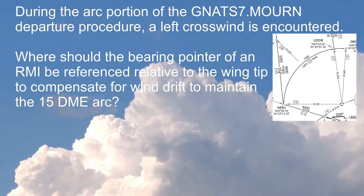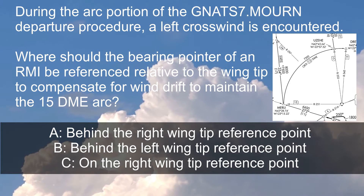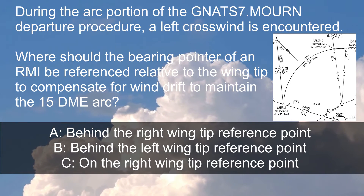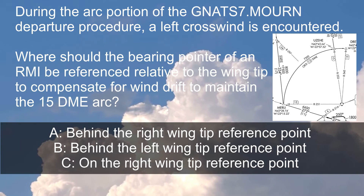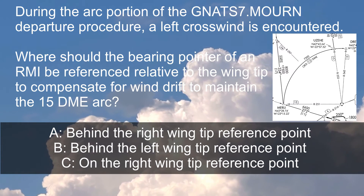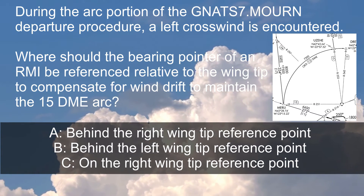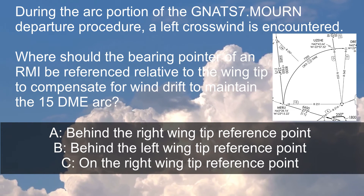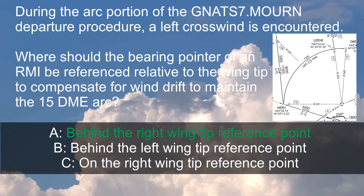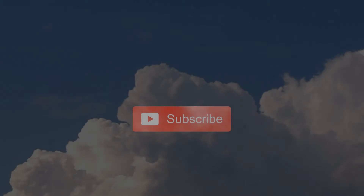So the answer to the question — during the arc portion of the NAT7.MORN Departure Procedure, a left crosswind is encountered, where should the bearing pointer of an RMI be referenced relative to the wingtip to compensate for wind drift to maintain the DME arc — is A: behind the right wingtip reference point.